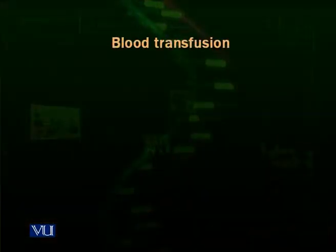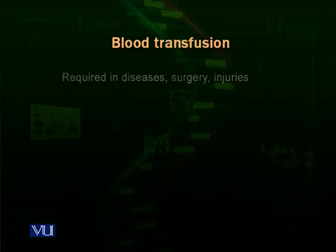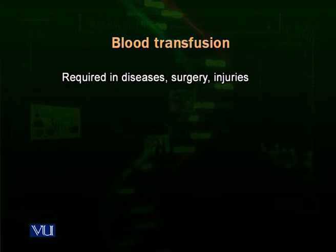There is an important property of these blood groups — these antigens and blood types — which is very important in blood transfusions. Blood transfusions are required in many situations, such as during surgery when blood is lost, due to injury, or in diseases like thalassemia where a patient consistently needs blood transfusions.